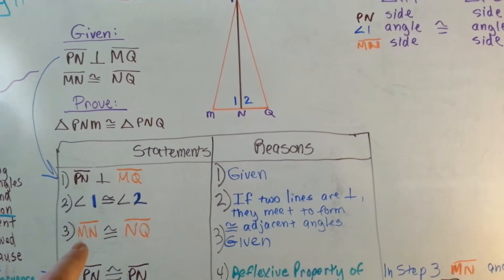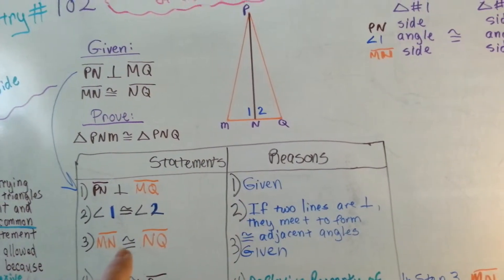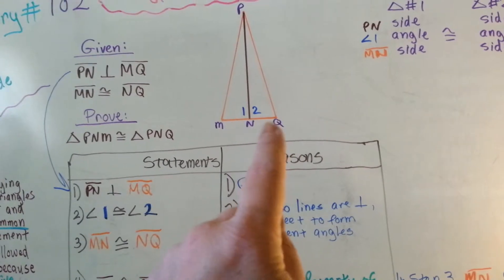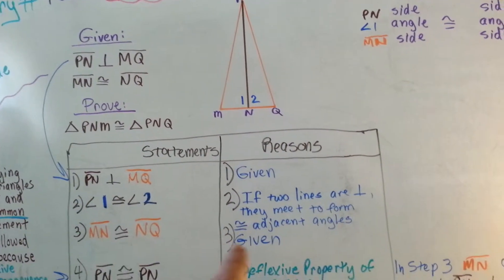So because we know if two lines are perpendicular they form to meet adjacent angles triangles, we can now say that line MN, this little guy, is congruent to NQ. That's given.